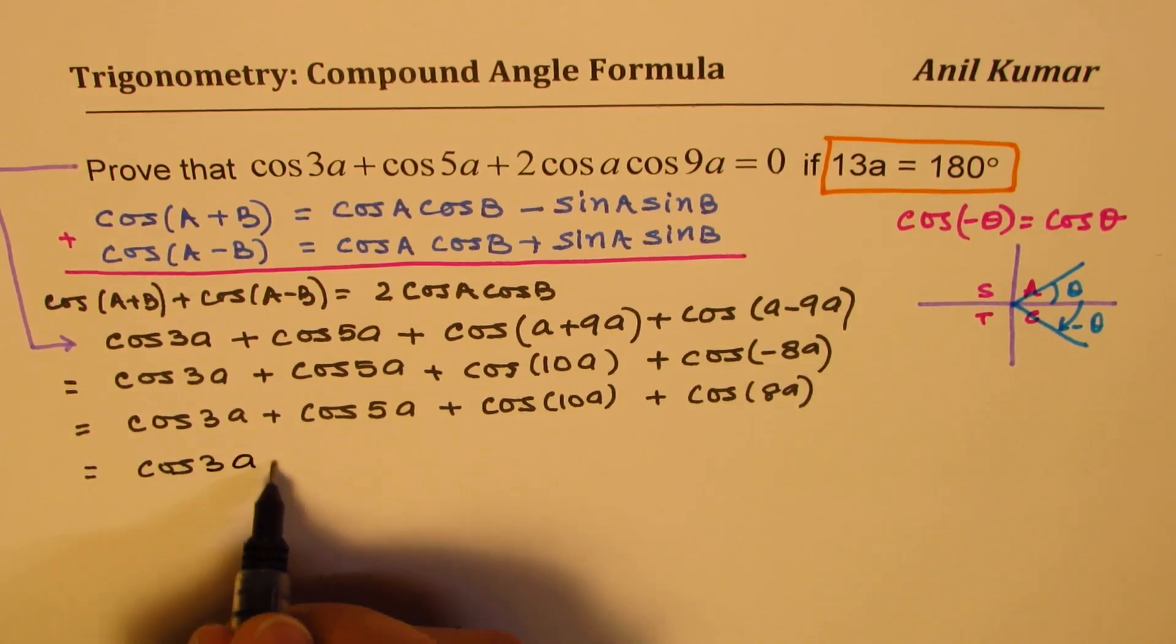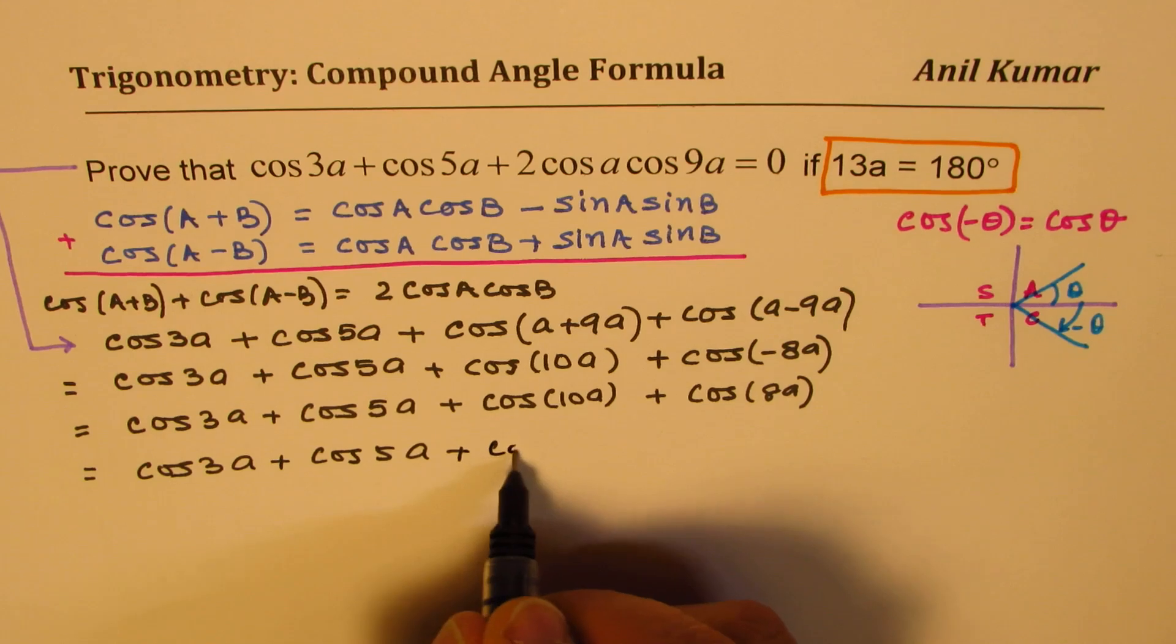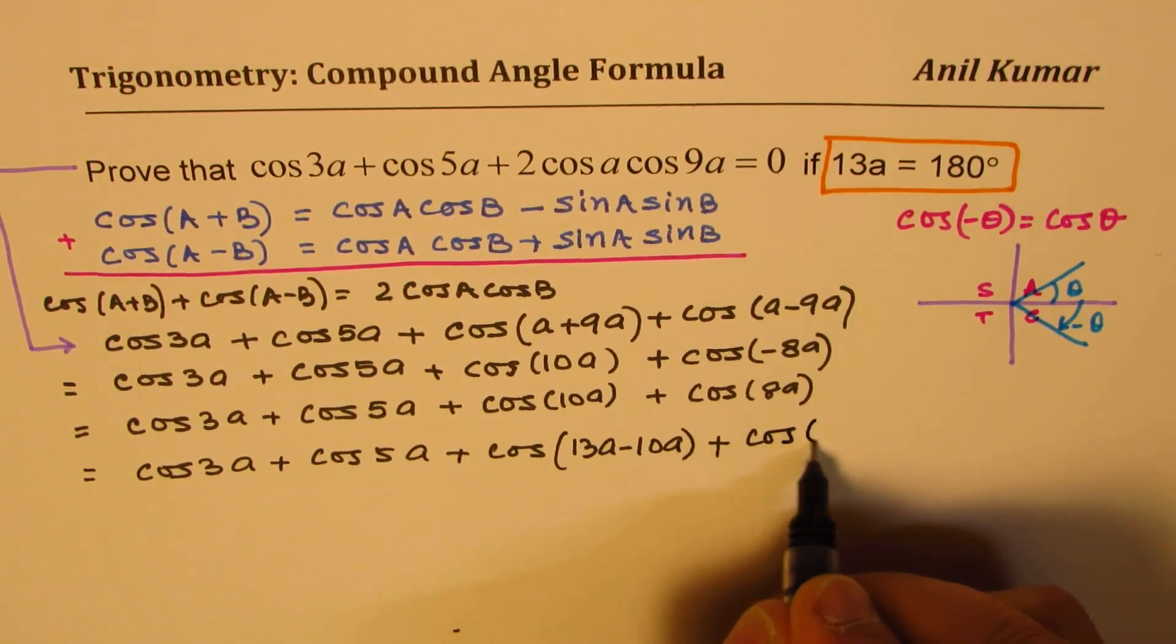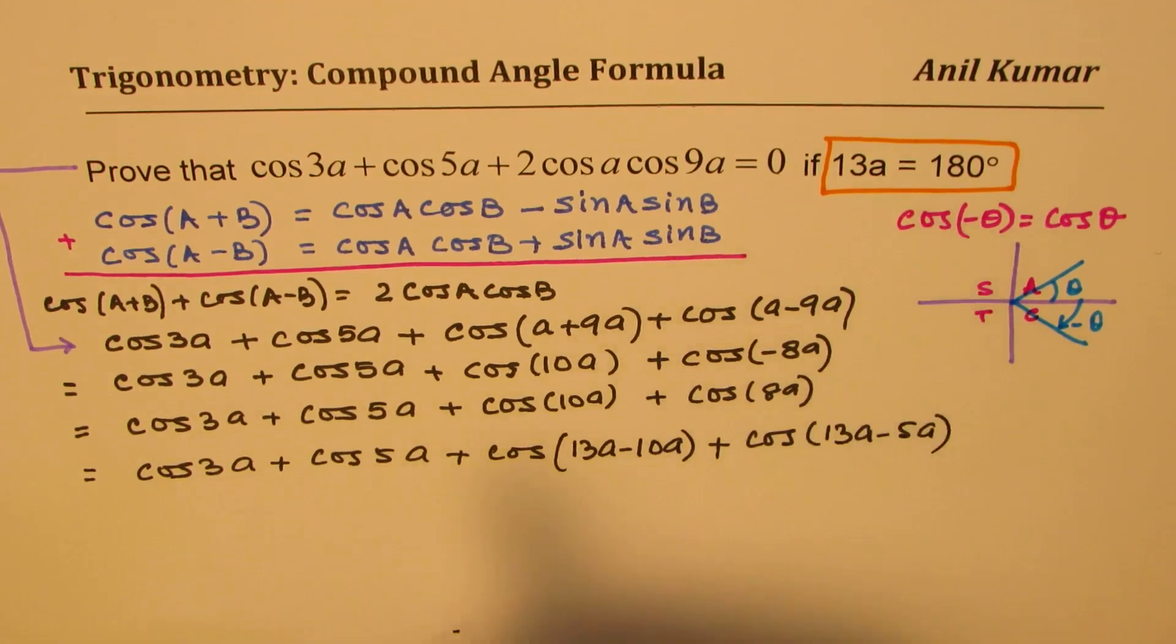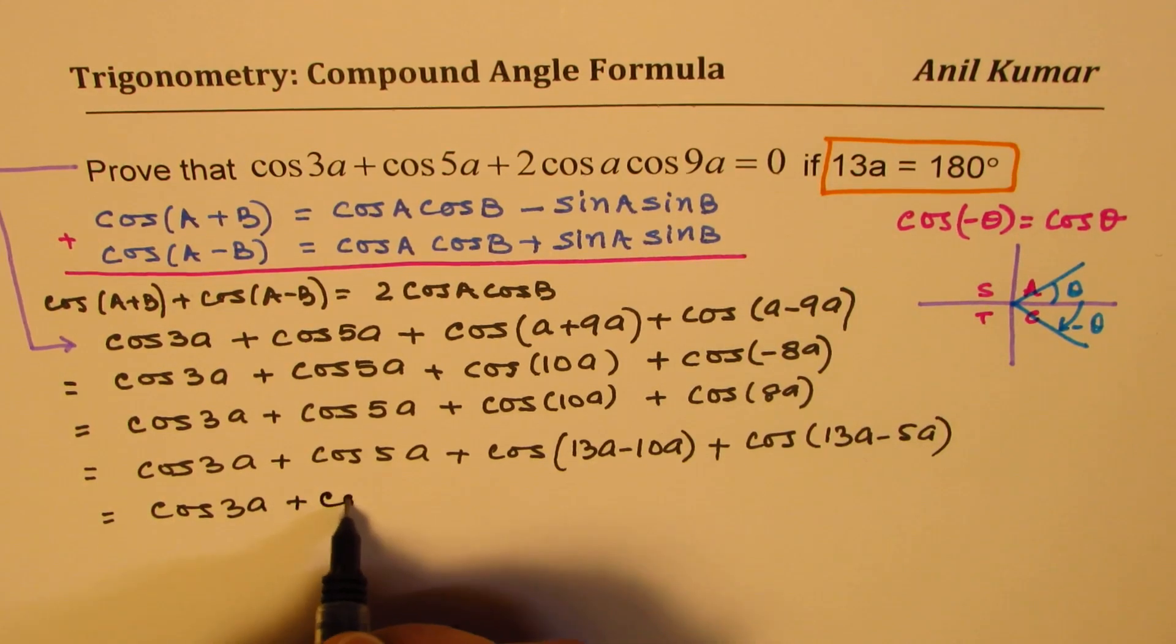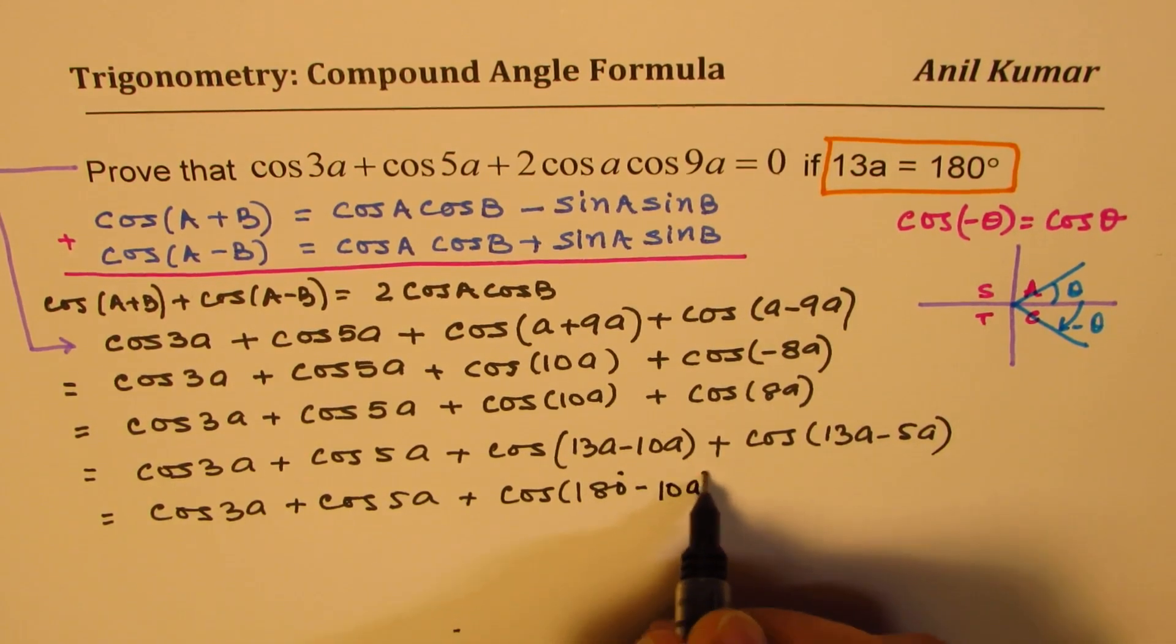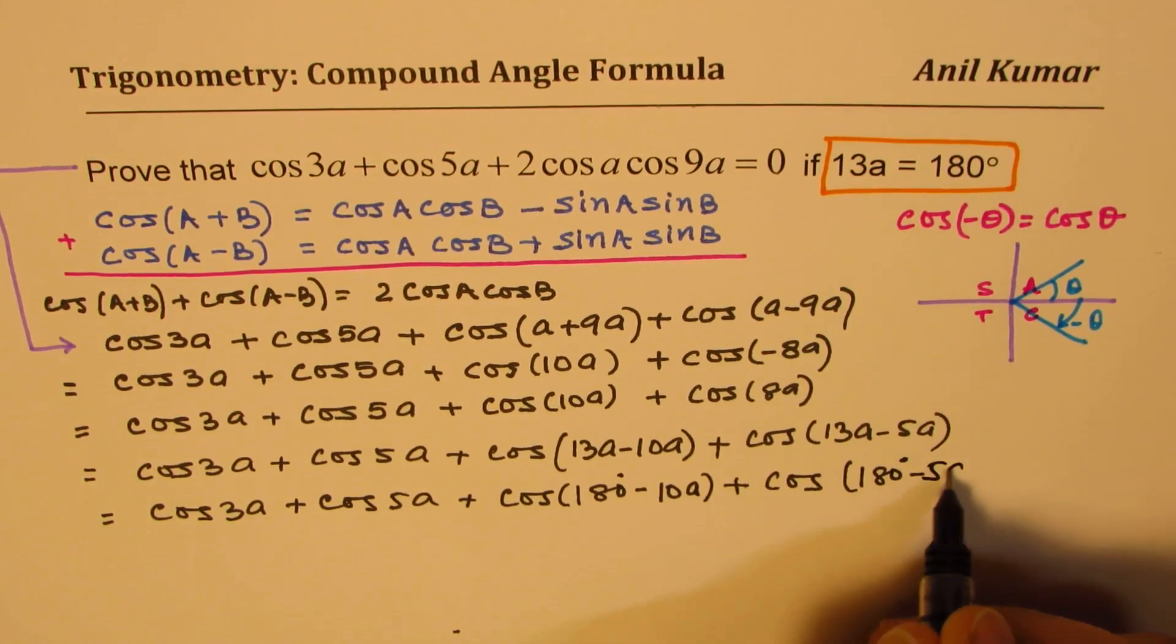So we get cos 3a plus cos 5a plus cos of 13a minus 3a plus cos of 13a minus 5a, which becomes cos 3a plus cos 5a plus cos of 180 degrees minus 3a plus cos of 180 degrees minus 5a.